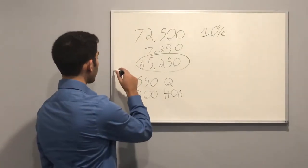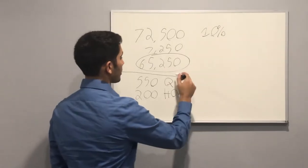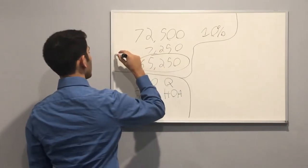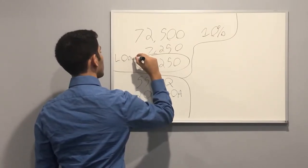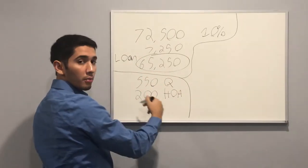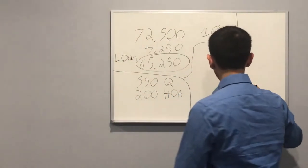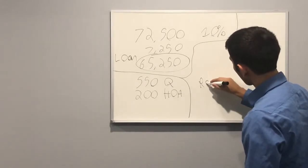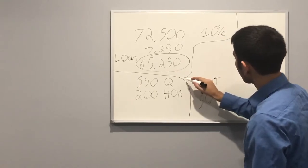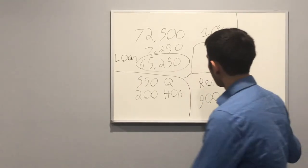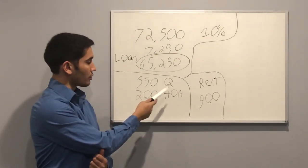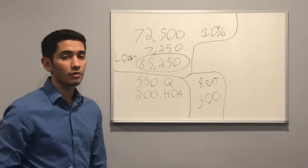I'm going to box this off now for my next example so you could really tell here. So on here I'm going to put loan. So you can see this is my loan amount and then this is how the payments break out. Now over here I'm going to put my rent which is what I'm collecting, is $900. So what I'm paying is $550 to Quicken Loans, $200 to HOA and I'm collecting $900 rent.